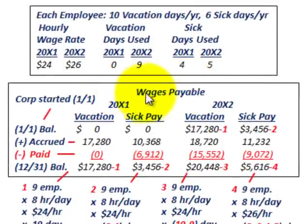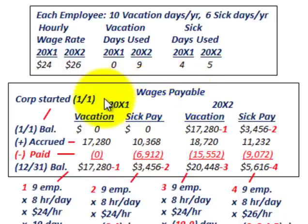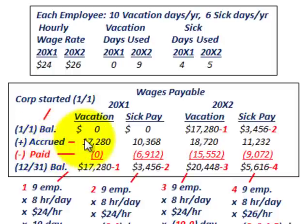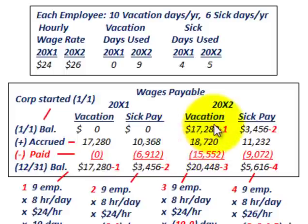When determining the costs for compensated absences, we set up a table showing wages payable for each year — 20X1 and 20X2 — covering vacation pay and sick pay. You begin with a beginning balance, add in what's accrued for the year, subtract out what was paid, and that gives you the ending balance. That ending balance then becomes the beginning balance of the next year.